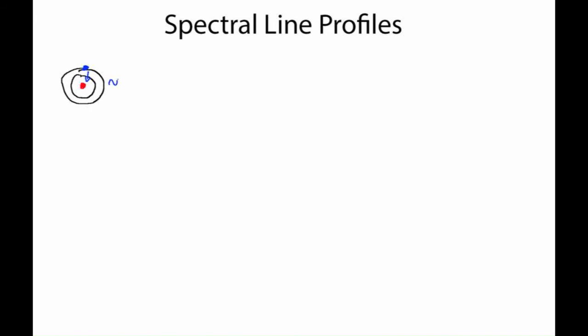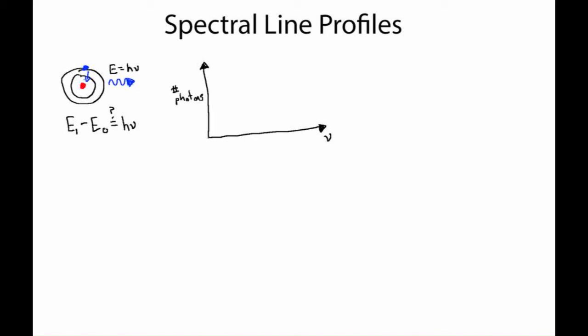In this video we'll talk about spectral line profiles. Suppose we have an atom with an electron in a higher energy state which spontaneously decays down to a lower energy state and releases a photon with an energy e equal to h nu. You might expect that the upper electronic state e1 minus the energy of the lower state e0 would always equal h nu. And the truth is, on average, it is equal. However, if I were to graph the number of photons coming out of an atom undergoing this kind of transition, I'll see that there's actually a spread in the distribution of photon energies.